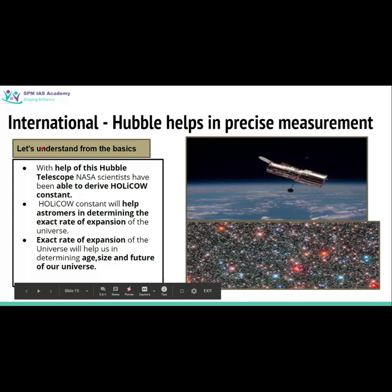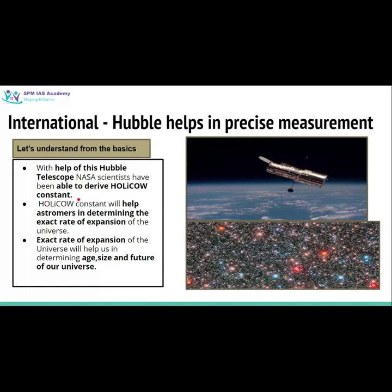With the help of this Hubble telescope, scientists have derived a constant figure known as the Hubble constant. Scientists have named it the Hubble constant. You may be directly asked in the prelims exam: 'The recently seen term Hubble constant in news is related to which of the following?' with options like plastic waste management or rearing of cows. The answer will be: understanding the rate of expansion of the universe.